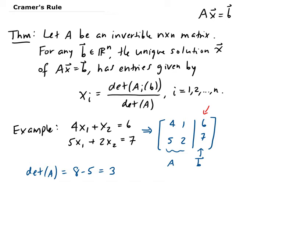Now we're going to calculate A₁(B). What this means is we take vector B and put it in place of the first column of A. So we put [6; 7] in for the first column, keeping [1; 2] as the second column.